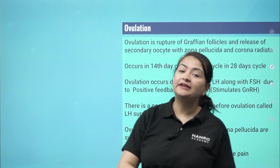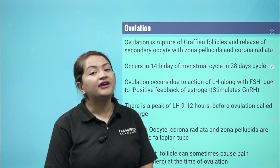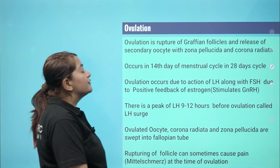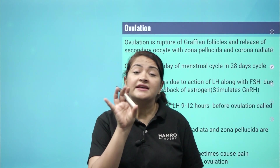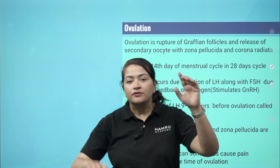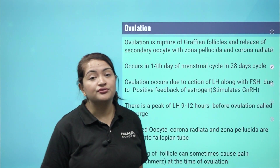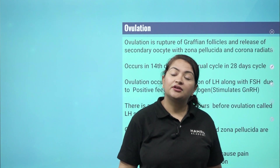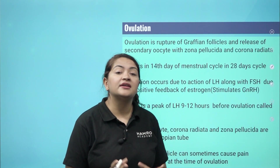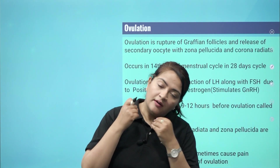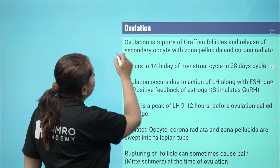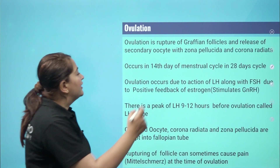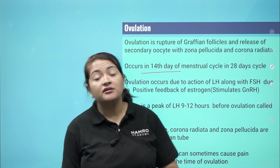Ovulation occurs on the 14th day of the menstrual cycle. It happens when the Graafian follicles rupture and the secondary oocytes are released. These secondary oocytes have surrounding cells — including the zona pellucida, a glycoproteinous membrane, and the corona radiata. Ovulation is the rupture of Graafian follicles and the release of the secondary oocyte with its corona radiata, usually on day 14 of a 28-day menstrual cycle.